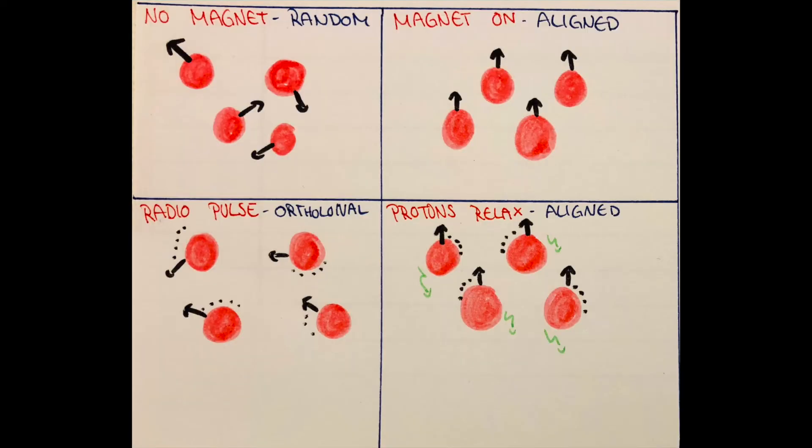The patient will be surrounded by a strong uniform magnetic field, which causes the hydrogen nuclei within the tissues to align in the direction of the magnetic field. The hydrogens will essentially act as little bar magnets, having a positive and a negative pole. This is the same mechanism as when compass needles align with the Earth's natural magnetic field.